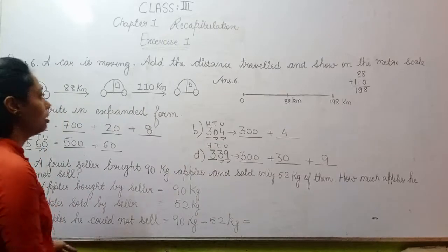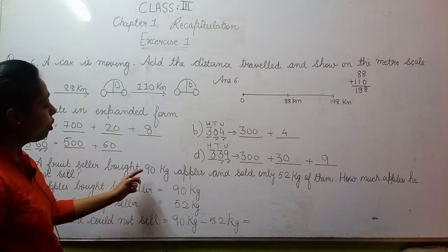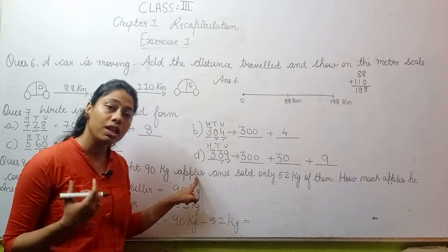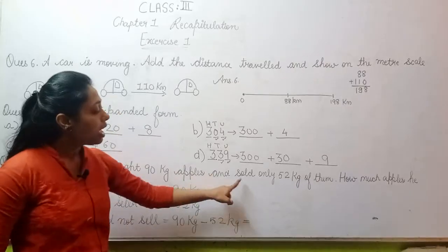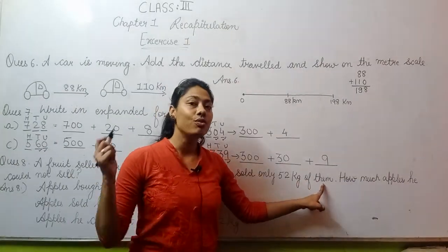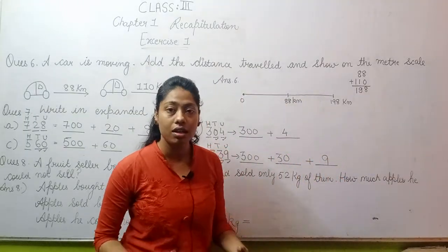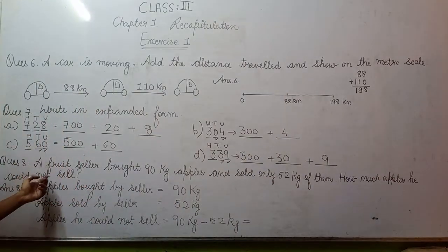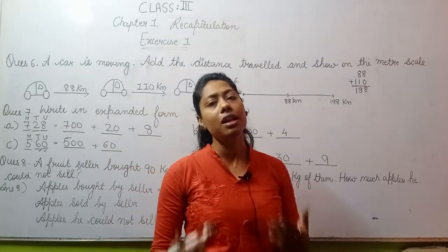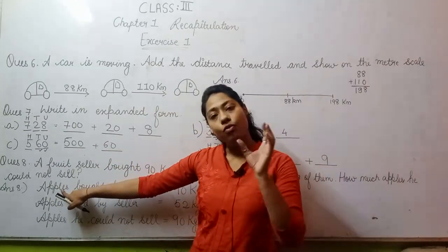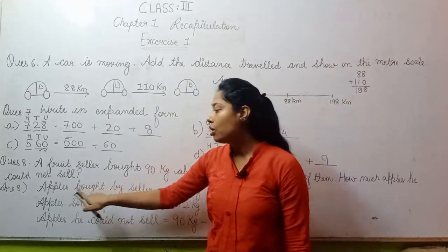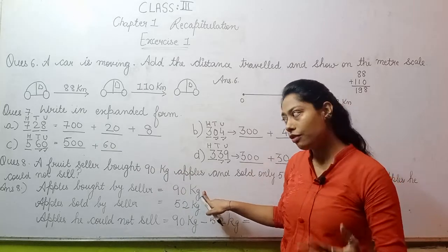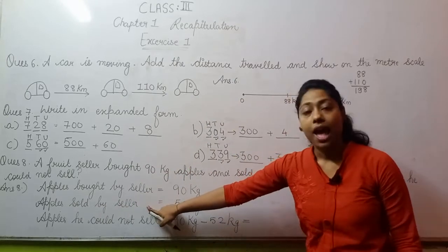Moving to question 8. A fruit seller bought 90 kg apples. They bought 90 kg apples, and sold only 52 kg of them. Now this fruit seller had purchased 90 kgs but how much could they sell - only 52 kgs. How much apples could they not sell? To answer, first you write the apples bought by seller - the seller purchased 90 kgs, so we wrote 90 kgs. Then you write apples sold by seller - how many apples could the seller sell - 52 kgs.